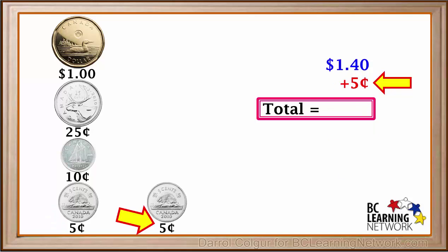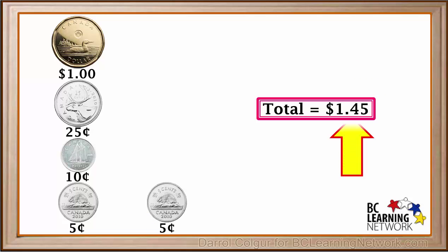Finally, we have another 5 cents, or 0.05 dollars, which is now a total of one dollar and 45 cents. So we can summarize by saying that this group of coins has a total value of one dollar and 45 cents.